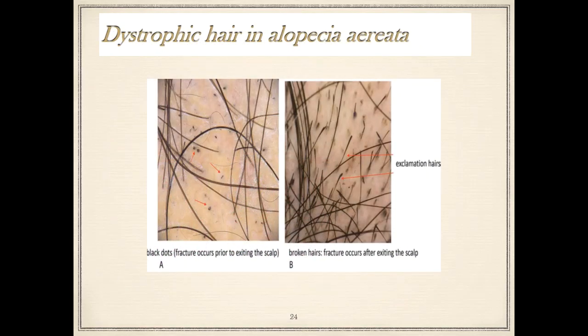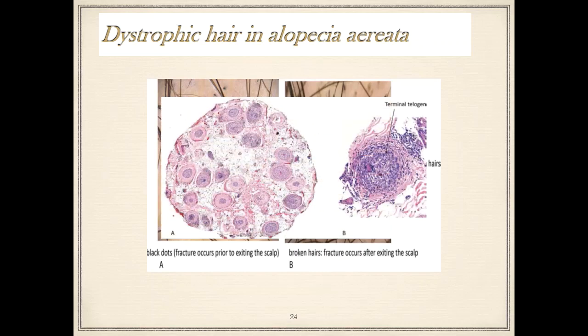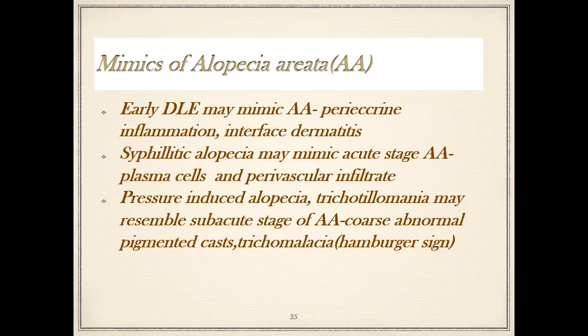These are the dystrophic hairs on trichoscopy in alopecia areata, including exclamation hairs and broken hairs due to fractures occurring after the hair exits the scalp. Mimickers of alopecia areata include early discoid lupus erythematosus, periacrine inflammation, inflammatory dermatitis, interface dermatitis, syphilitic alopecia (which can mimic the acute stage with lymphocytic plasma cells and perivascular infiltrate), pressure-induced alopecia, and trichotillomania (which may resemble the sub-acute stage). Coarse abnormal pigmented cast, trichomalacia, or the hamburger sign may also be seen.